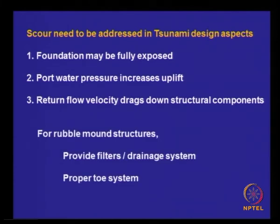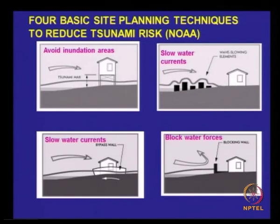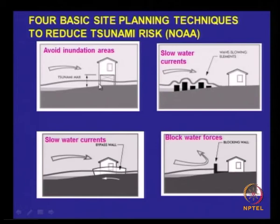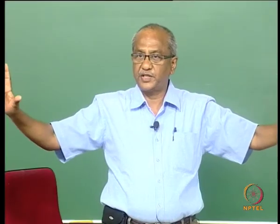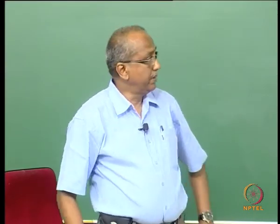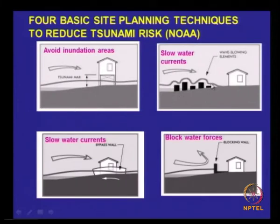For rubble mound structures, you may need to provide filters, drainage systems, and proper stone systems. Four basic site planning techniques to reduce tsunami risk as per NOVA: avoid inundation areas; if structures are needed, have them only on piles with no solid obstruction; or have buffers to reduce run-up. You can also streamline your structure, which is expensive, or have block walls like crown walls in the case of breakwaters.